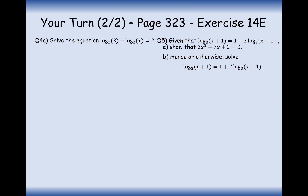Let's solve some equations - slightly more difficult questions. For question 4a, first combine the two logs on the left-hand side using the addition law: log base 2 of 3x equals 2. Get rid of the log by raising 2 to the power of both sides: 3x equals 4, so x equals 4 over 3.